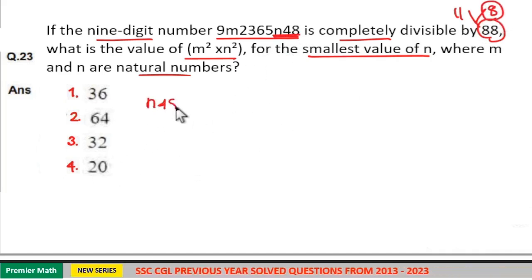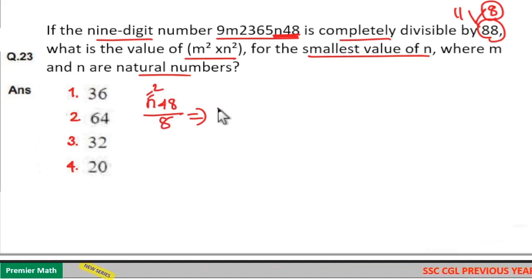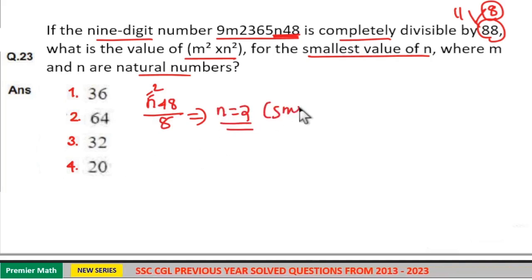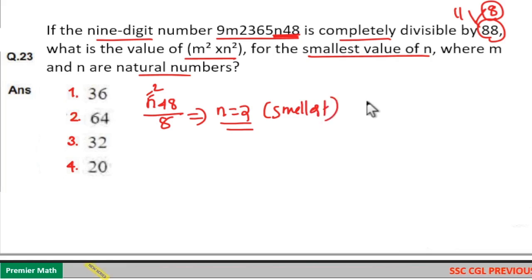That is, n48 should be divisible by 8. If I put the value of n as 1, 148 is not divisible by 8. So put the value of n as 2. 8 goes 3 times in 24, 8 goes 1 time in 8. So n equals 2 here because we need the smallest possible value of n.